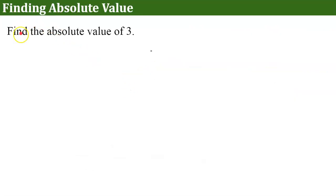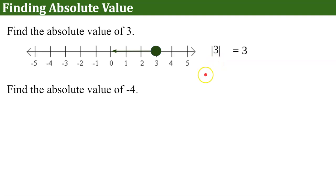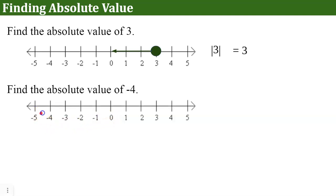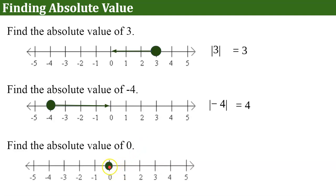Let's find the absolute value of 3. The absolute value of 3 is 3 units from 0, so it equals 3. Now let's find the absolute value of negative 4. We plot negative 4 on the number line — it is 4 units from 0 — so the absolute value of negative 4 is positive 4. One more: the absolute value of 0. Zero is 0 units from 0, so the absolute value of 0 is 0.